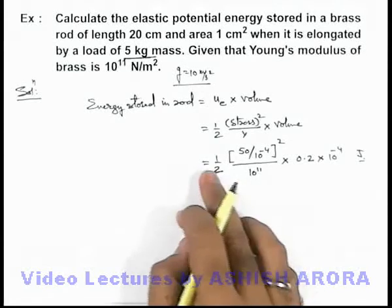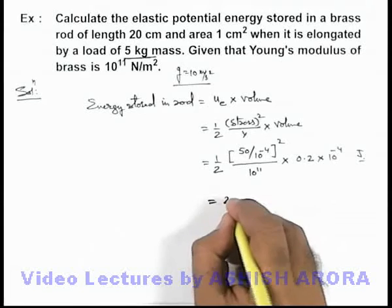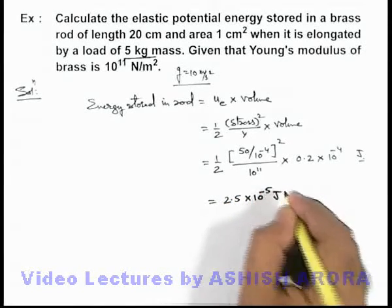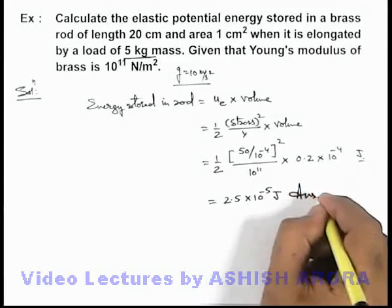So if we just simplify the expression and calculate it, we'll finally get 2.5 into 10 to power minus 5 joule. That'll be the answer to this problem.